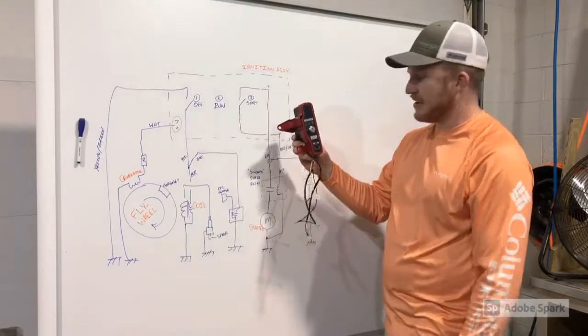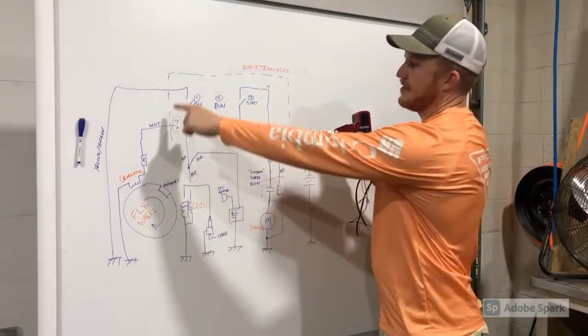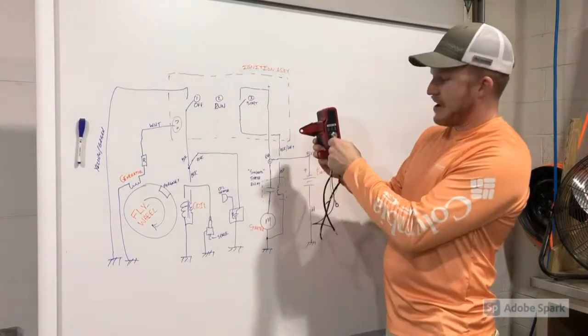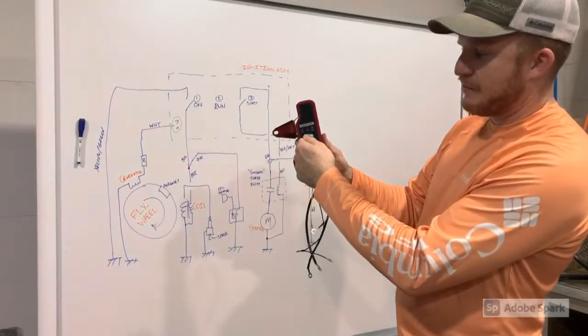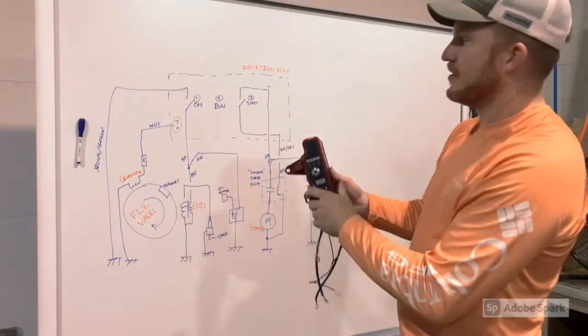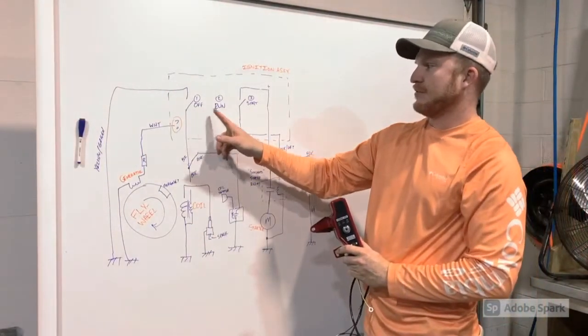This is the ignition assembly, and it's represented here by the large dotted region up top. And you have three positions. You have an off, a run, and a start position. And just like up here, you have an off, a run, and a start.